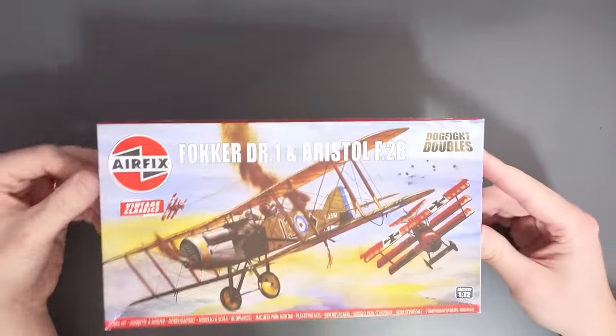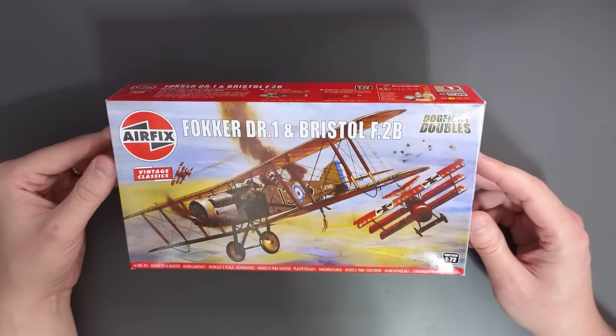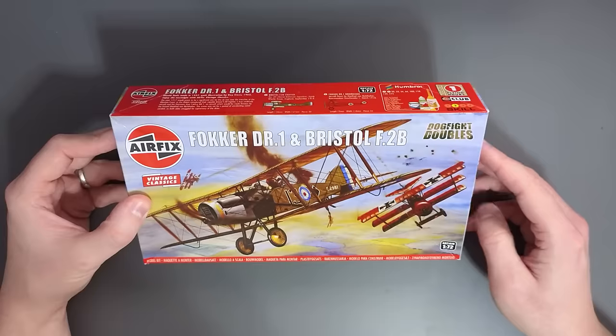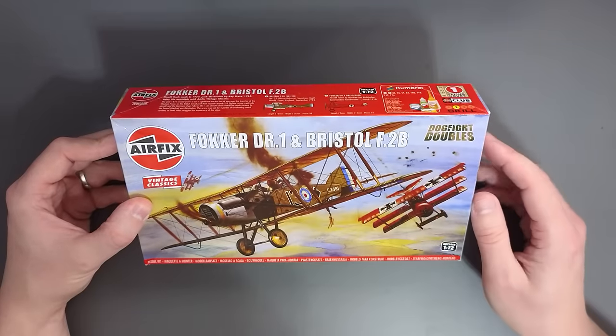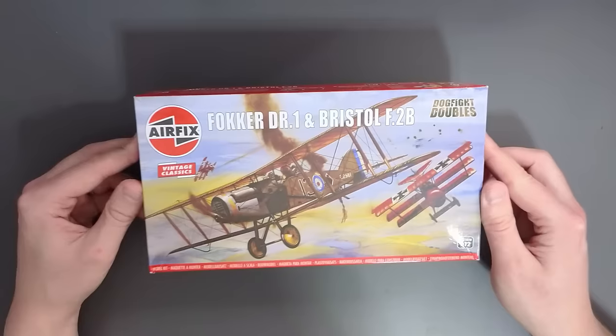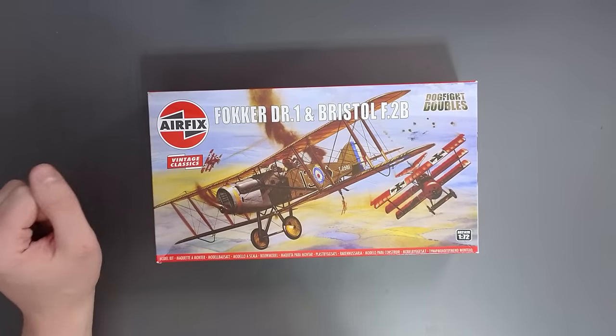Hello everyone, Matt from Model Minutes, and welcome back to the workbench for another unboxing. Today we're looking at another vintage classic, but this time it is a dogfight double set, featuring the Fokker DR1 and a Bristol F2B from Airfix. So join me as I take a look inside the box and see what we've got.